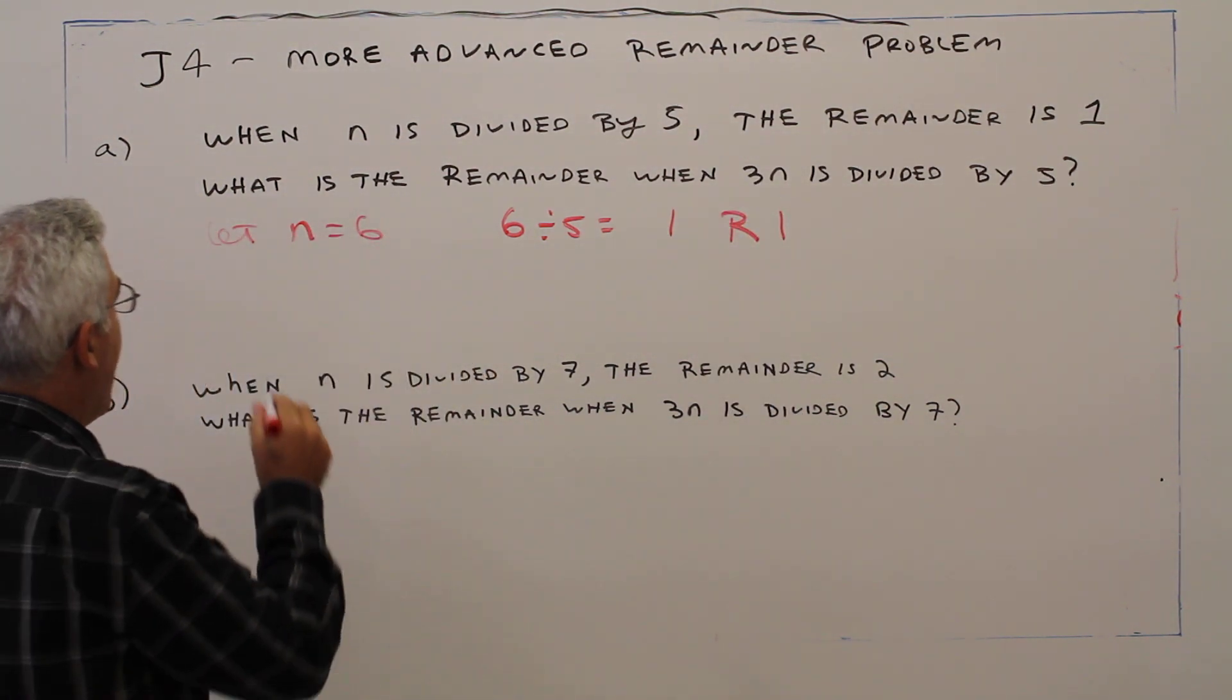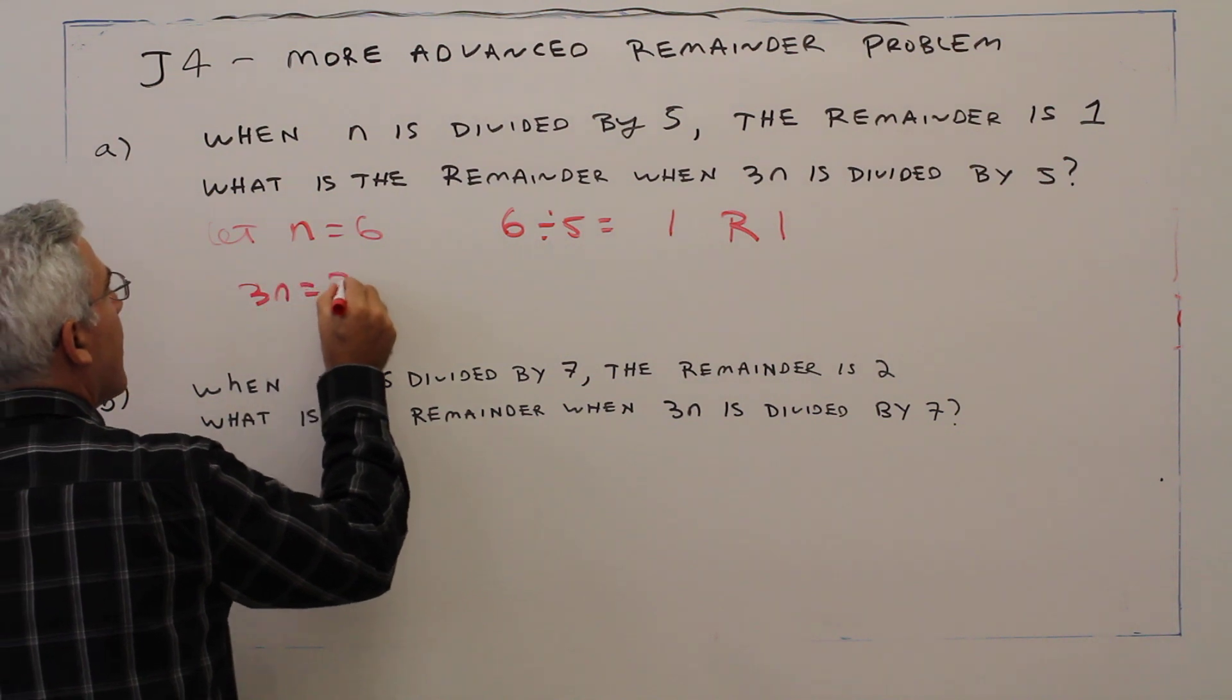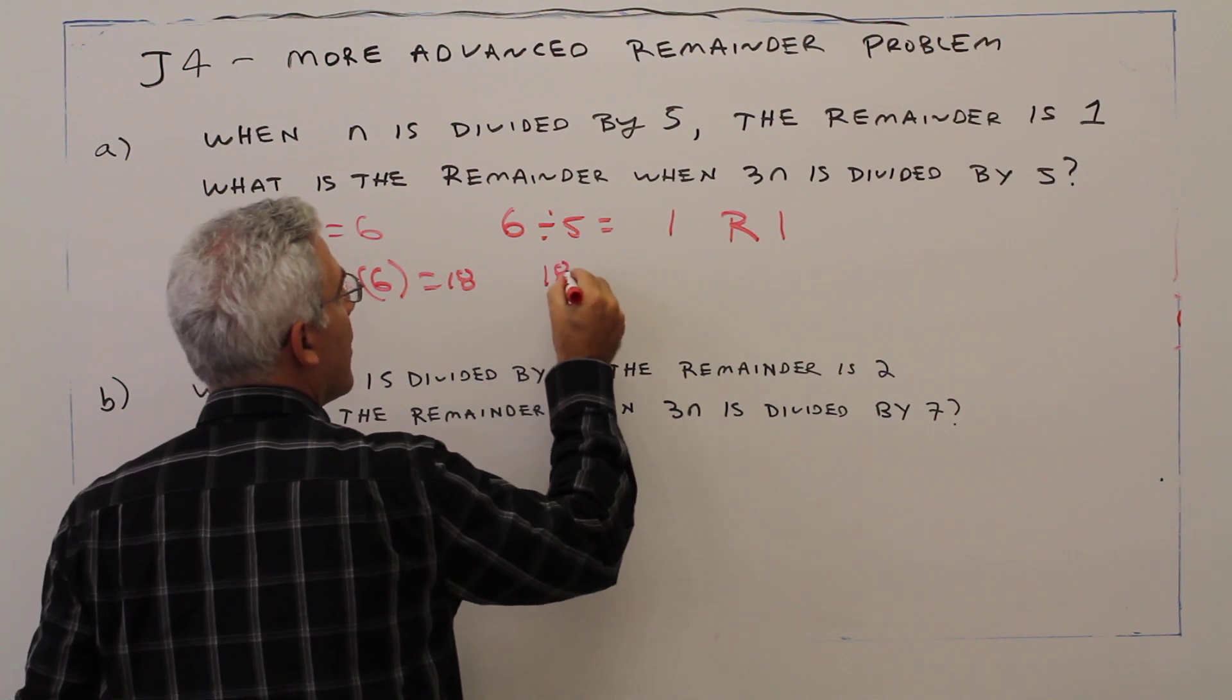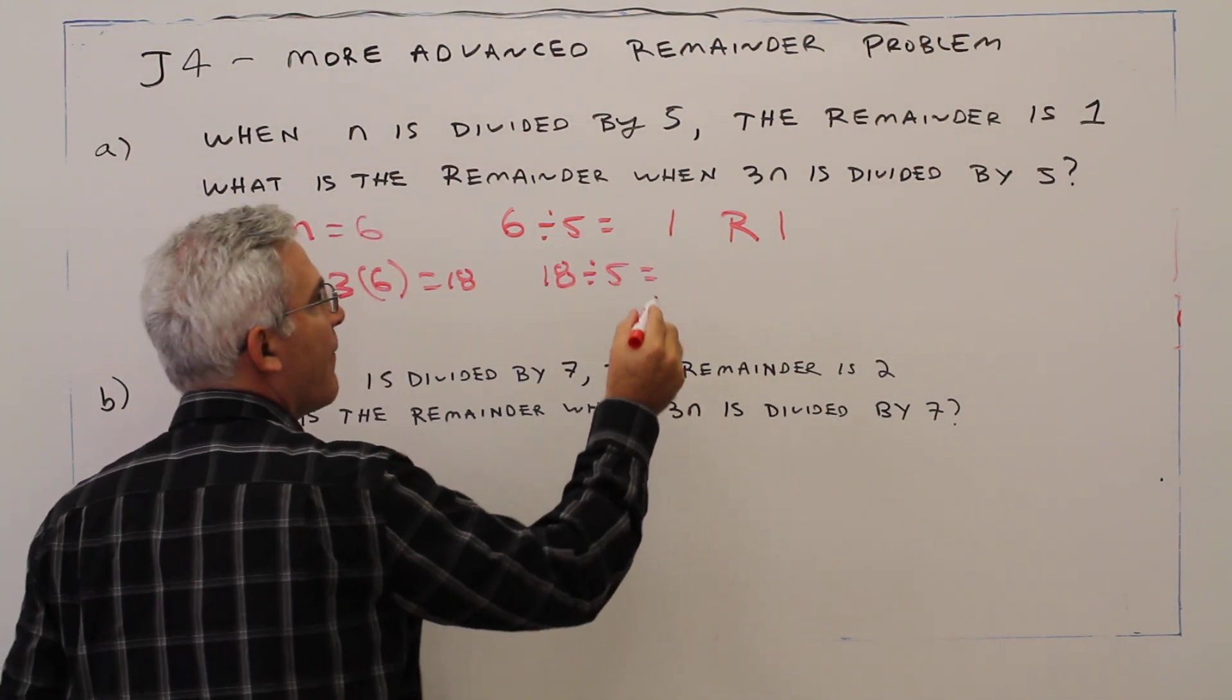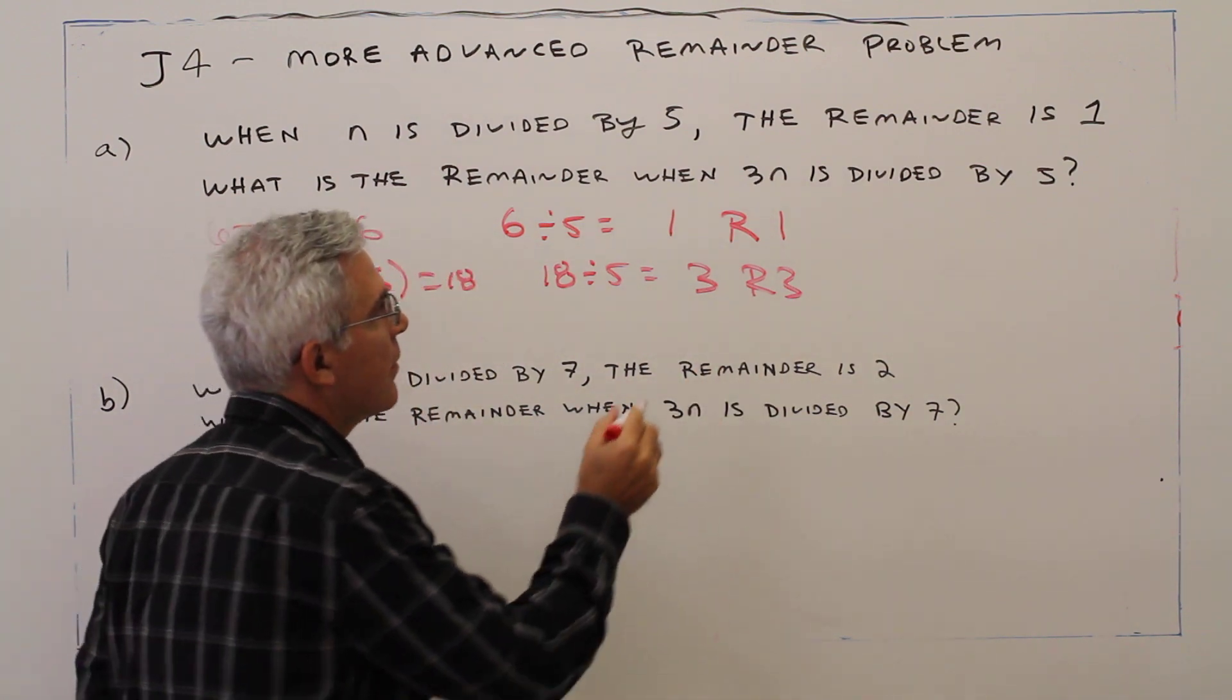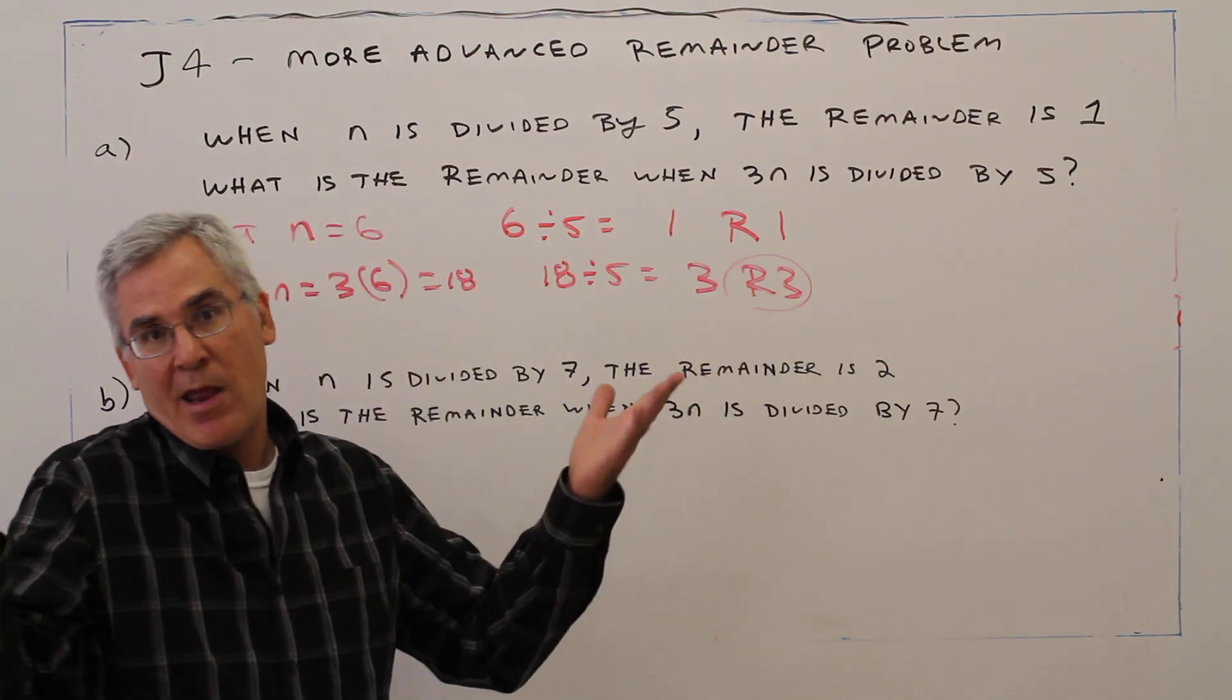Alright, then 3n equals 3 times 6 equals 18. 18 divided by 5 is 3, remainder 3. So my answer is remainder 3.